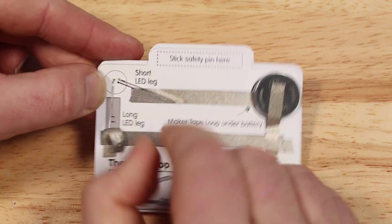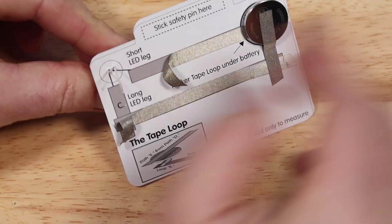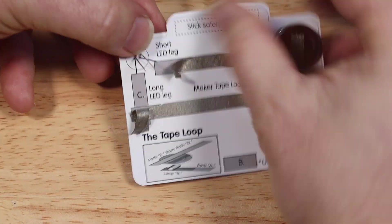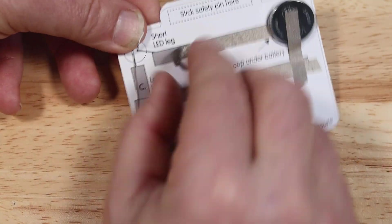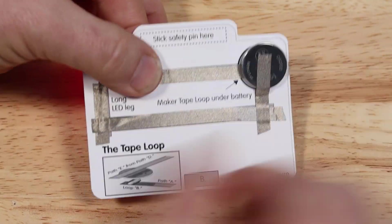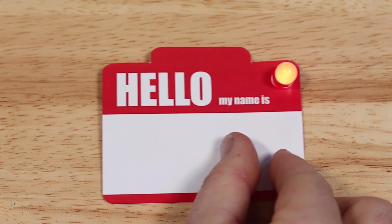Take another one. Peel back the tape, bend the LED legs straight, pull the LED out, spin it, reinsert it, bend the legs down onto the name tag, and reapply the maker tape. Now the LED will light up. That does it for the troubleshooting section.